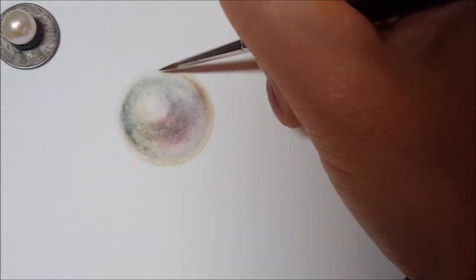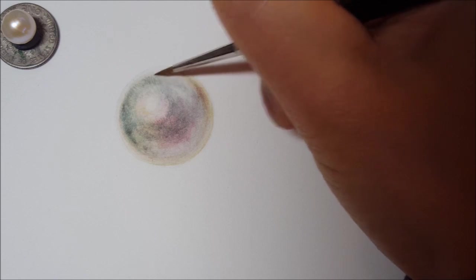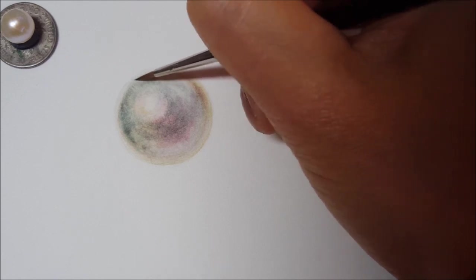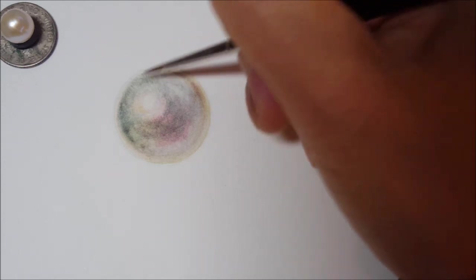And I also want to darken this upper area some more. You see, I just keep going back into the areas. Doing a little bit of dry brush. Then smoothing things out with water. And continuing to build up my layers and colors like this.